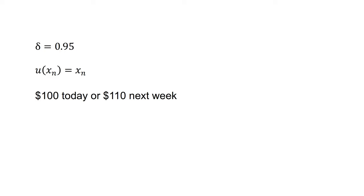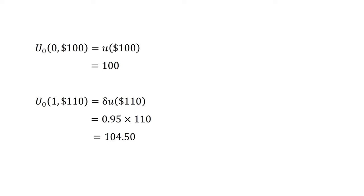To determine this, we calculate the discounted utility of each option. The agent will prefer the option with the highest discounted utility. The discounted utility of the $100 today is u0(0,100) equals u of 100, equals 100. The discounted utility of the $110 next week is u0(1,110), which equals delta times the utility of 110, which equals 0.95 times 110, which equals 104.5. This exponential discounter will prefer to receive $110 next week, as it leads to higher discounted utility.